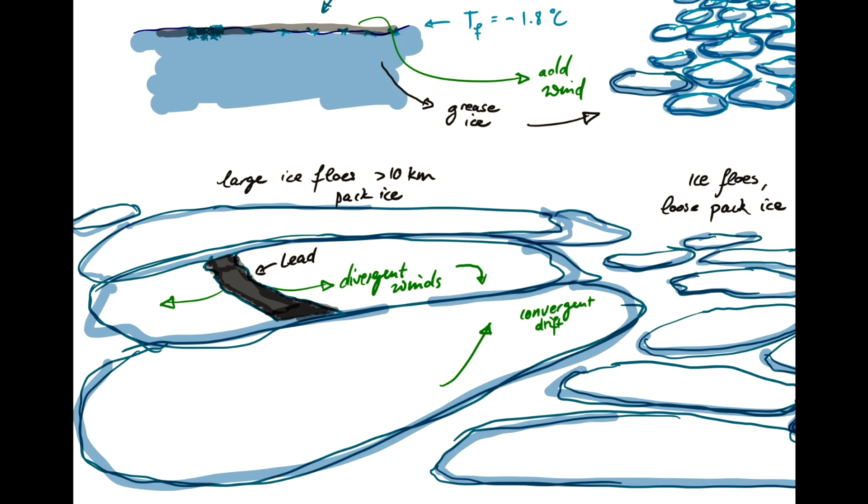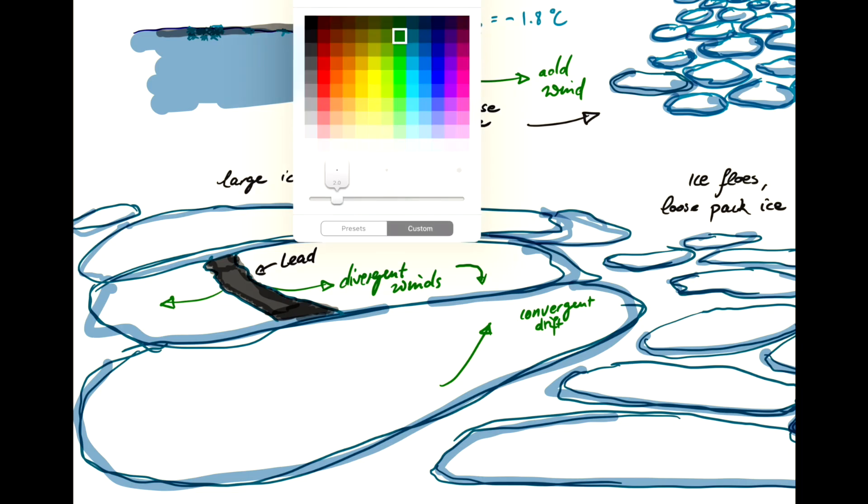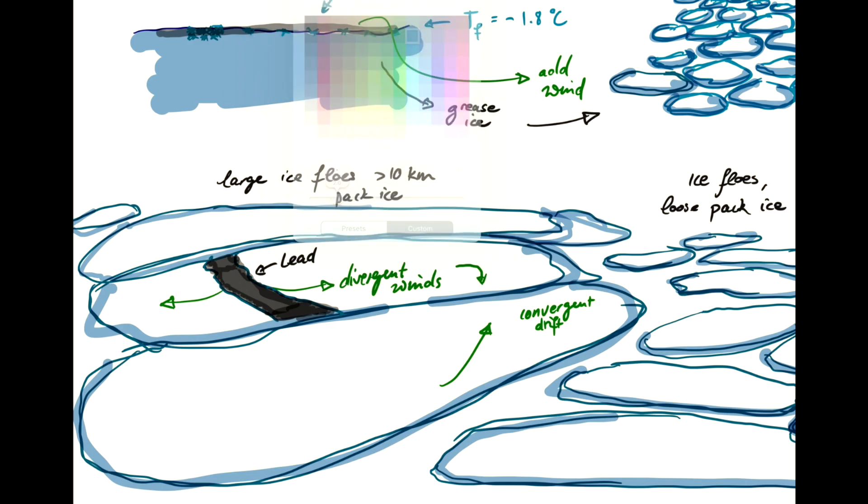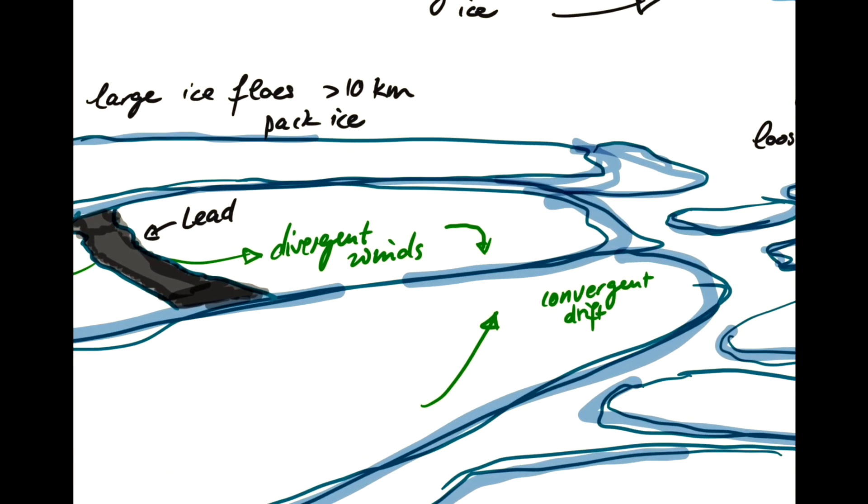Then the ice can actually break up and form structures that are so-called pressure ridges. The pressure builds up and breaks the ice into these blocks.